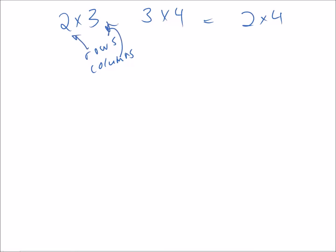So this is number of rows, 2 and 3 columns. The number of columns in matrix A and the number of columns in A matches the number of rows in B.